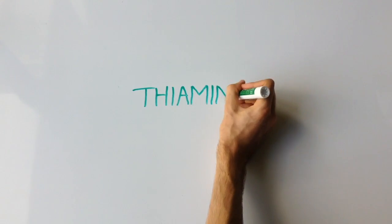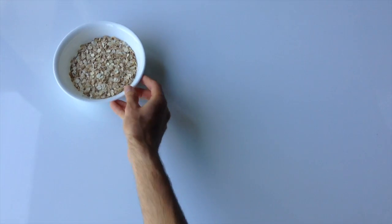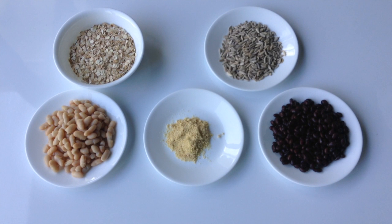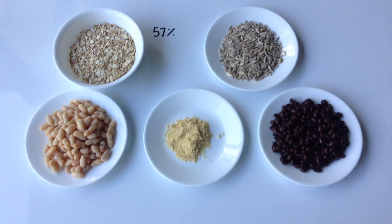So with the many health benefits of thiamine, what are some good food sources of it? Well, oats, sunflower seeds, navy beans, nutritional yeast, and black beans are some of the top foods high in thiamine. One cup of oats has 57% of your daily value.